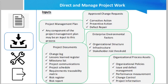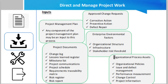The inputs for the Direct and Manage Project Work process include: the project management plan, where any component of the plan may be an input; project documents like the change log, lessons learned register, milestone list, project communications, project schedule, requirement traceability matrix, risk register, and risk report; approved change requests such as corrective action, preventive action, and defect repair; enterprise environmental factors including organizational structure, infrastructure, and stakeholder risk threshold; and organizational process assets including organizational policies, issue and defect management, performance management, change control, and project information.